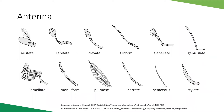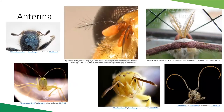Antenna type can also help narrow identification — sometimes to order, sometimes to family, depending on the insect. Different insects have different antenna types: the bristle-like arista of a fly antenna, the plumose feathery antennae of moths, filiform long antennae, and elbowed antennae. Using antenna type helps narrow down what insect you potentially have.